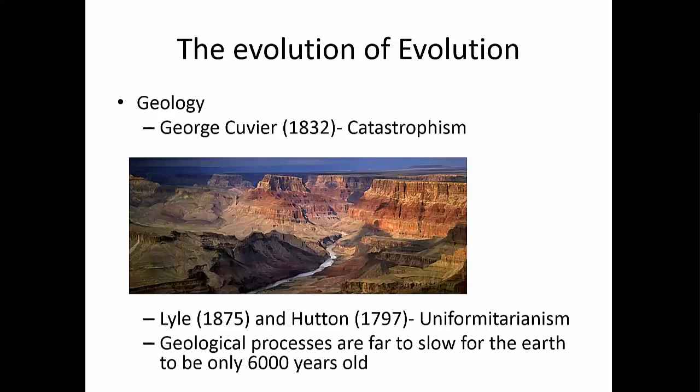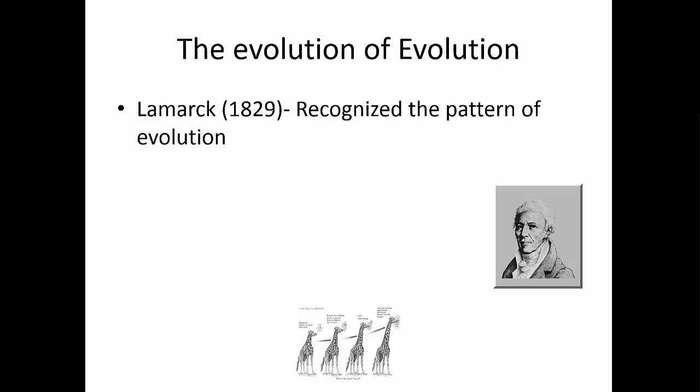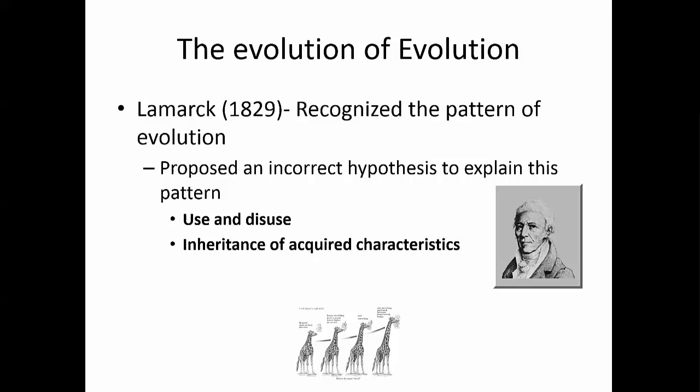At the time, in the 1800s, people thought the earth was about six thousand years old - but based on the earth we live on, we know that's not the case. The earth is much older than that, and that gave room for scientists to start thinking about how life could have changed over eons of time. People knew that life probably changed for quite a while, but it wasn't until Lamarck that we had a really good explanation as to how it might change. Lamarck saw the pattern of evolution and proposed a hypothesis to explain it.